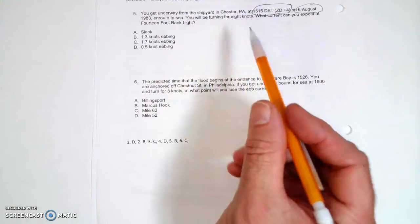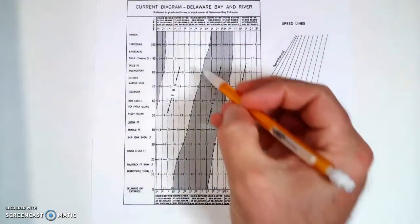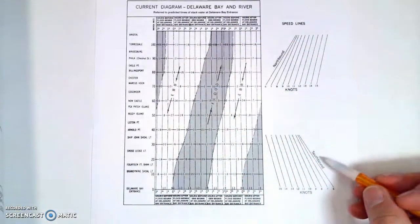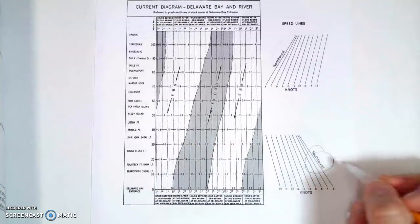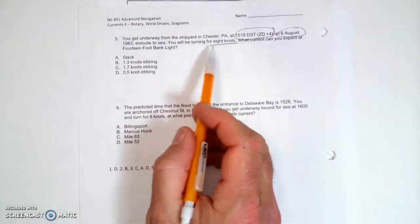We'll be turning eight knots, so our speed is going to be eight knots. That's important. I'm going to be headed downbound, southbound, so I'm going to be using the southbound speed lines and the eight knot speed line because that's the speed they tell me I'm going to make.